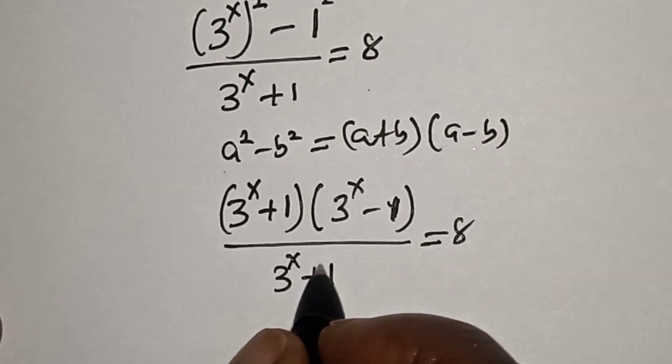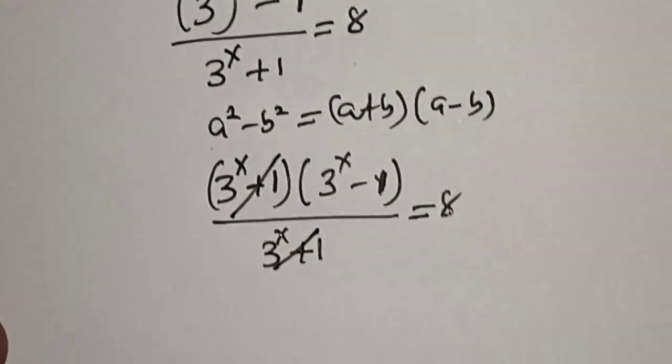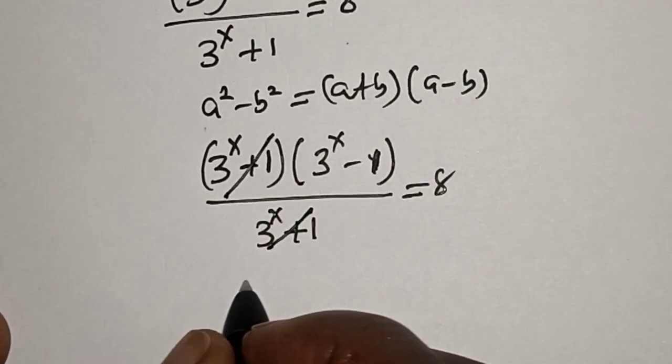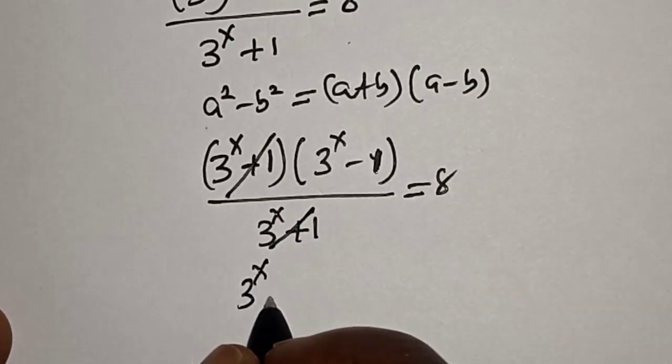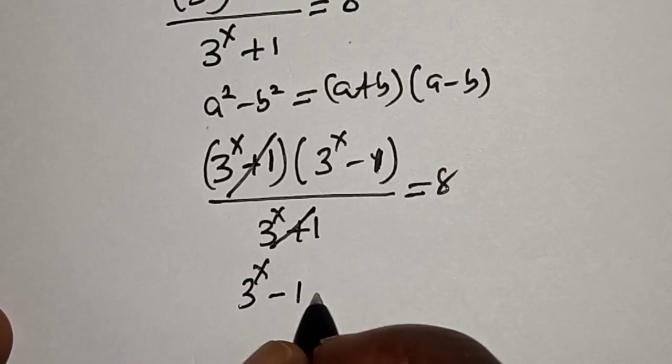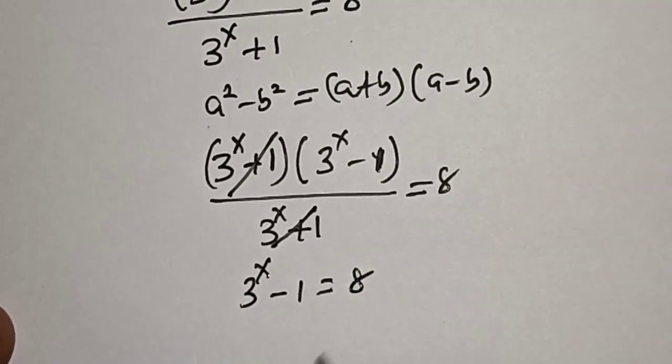From here, you cancel out the (3 raised to power x plus 1) terms. Therefore, 3 raised to power x minus 1 will be equal to 8.